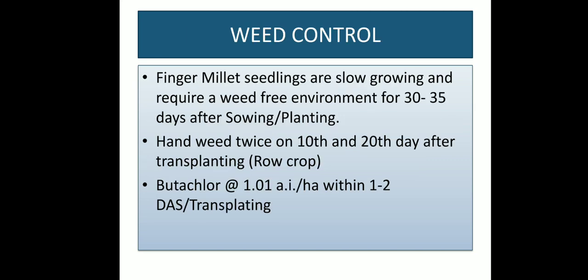Weed Control: The critical period to control weeds is up to 35 days after sowing or planting. Mechanical control by 2 to 3 inter-cultivations is necessary, supplemented with one hand weeding. Pre-emergent application of oxychloroquine at the rate of 0.5 liter active ingredient per hectare or butachlor at the rate of 1.0 liter active ingredient per hectare within 1 to 2 days of sowing or transplanting may control many weeds.